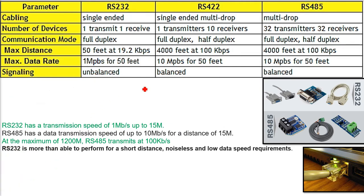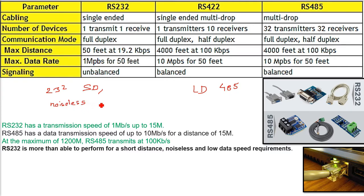When to use what: RS-232 works for short distances. For long distance, go for RS-422 or RS-485. RS-232 is good for noiseless channels where there is little or no noise. When your channel has noise, use RS-485 — it works very well in noisy channels. For moderate speed needs, such as connecting a keyboard and mouse, RS-232 is sufficient. When you need higher Mbps speeds, use RS-485 or RS-422.